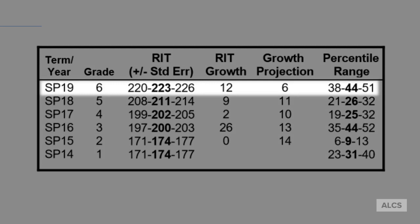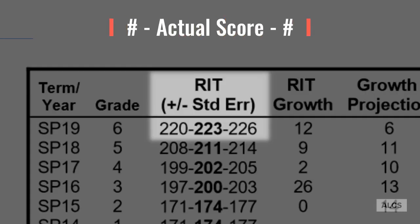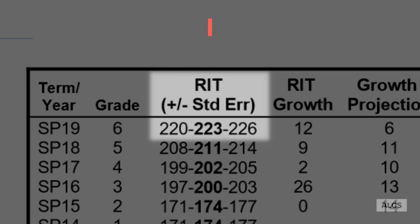Each row in the chart represents a completed test. In this example, the top row indicates the student's result from the test completed in the spring of 2019 when the student was in sixth grade. In the RIC column, the three numbers indicate the student's actual test score as well as a range that estimates how the student would do if he or she took the same test again within the same timeframe.